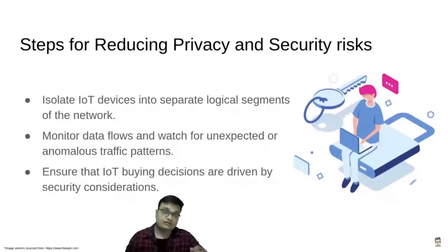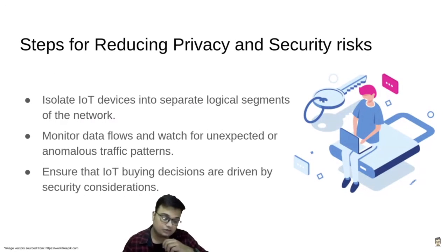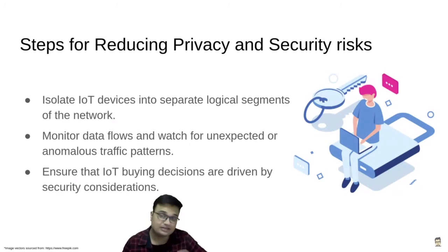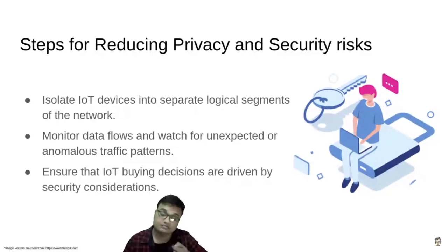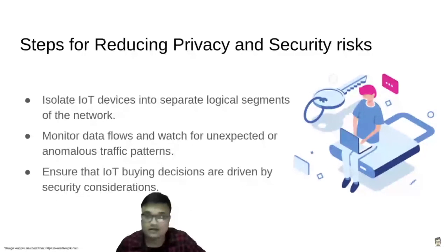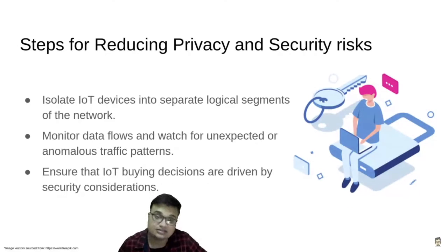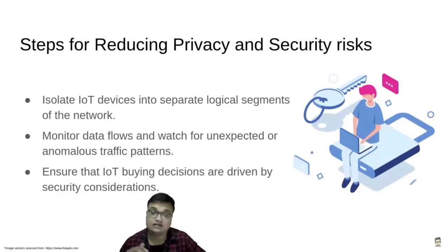It's time we take a closer look at the whole life cycle of a smart device and go even beyond the scope of GDPR. To reduce risk, we can take a few small but important steps. Number one: isolate IoT devices with separate logical segments of the network — make sure your smart devices are not all connected to the same network, because if one is compromised, all of them might get compromised. Monitor data flows and watch for unexpected or anomalous traffic patterns, as any anomalies might mean someone else is accessing your network. Ensure that IoT buying decisions are driven by security considerations, such as the ability to change default passwords, receive and apply patches, and disable unneeded services.